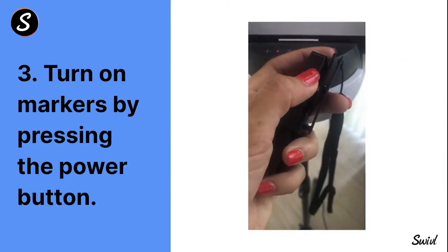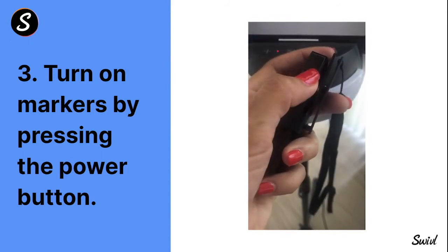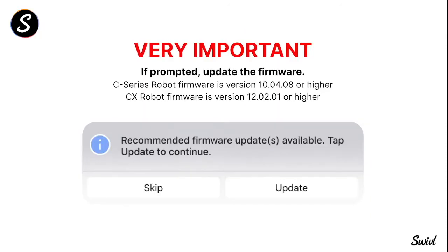Turn on your markers by pressing the gray button with the universal power symbol — not the red record button. If you ever see a firmware update prompt, it is vital that you always update it — never skip it. The first time you plug these devices in, they will likely ask to update the firmware since it has been updated from what was pre-installed at the factory. Firmware updates contain bug fixes and new features, so always allow the update and never dismiss it.